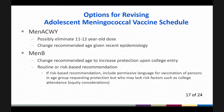There are several options under consideration when revising the adolescent schedule. For MenACWY, an option is to eliminate the 11-12-year-old dose or to change the recommended ages for vaccination given the low incidence of disease in young adolescents. For MenB, an option is to change the recommended age for vaccination to increase protection upon college entry given the limited duration of protection. Another option for MenB is to change the shared clinical decision-making recommendation to either a routine or risk-based recommendation. If there is a change to a risk-based recommendation, the workgroup expressed a preference to include permissive language for vaccinations of persons requesting protection but who may lack risk factors, to address equity considerations, such that college attendance would not be a requirement to receive protection from MenB vaccination.